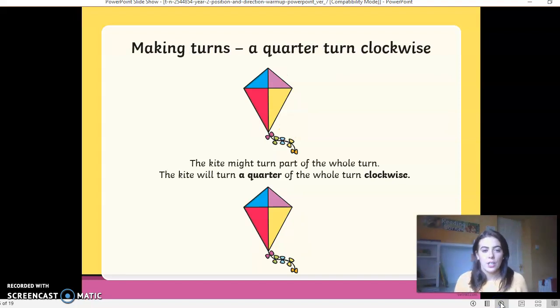If we make further turns, the kite might turn part of the whole turn. So it doesn't do the whole turn. It's only doing part of it. The kite will turn a quarter of the whole turn clockwise. Now, you know from working on your clock, you know what a quarter is already, don't you?